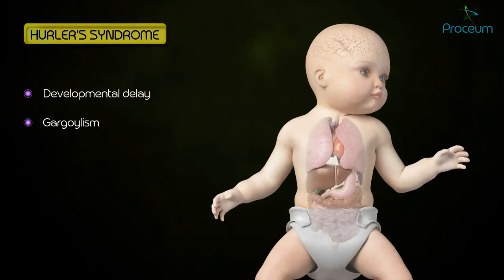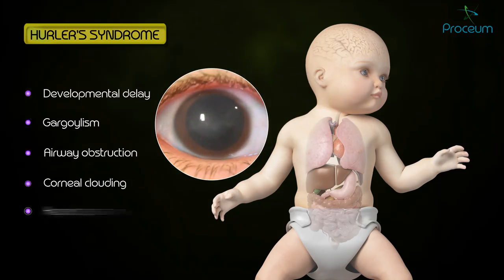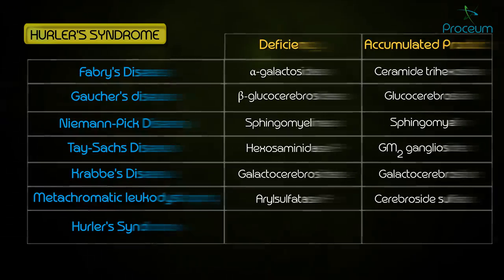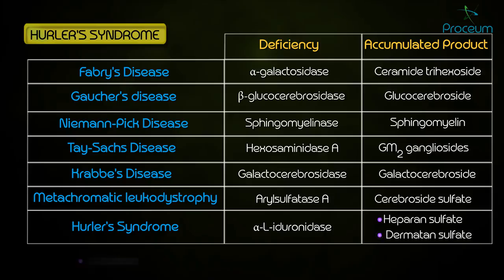Hurler's syndrome presents with developmental delay, gargoylism, airway obstruction, corneal clouding, and hepatosplenomegaly. It has a deficiency in alpha-L-iduronidase, leading to an accumulation of heparan sulfate and dermatan sulfate. Deposition in coronary arteries leads to ischemic heart disease.